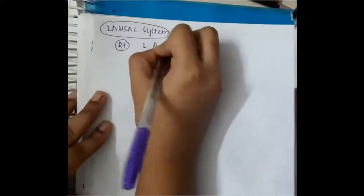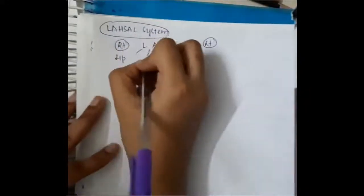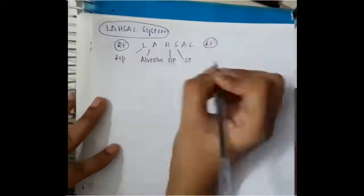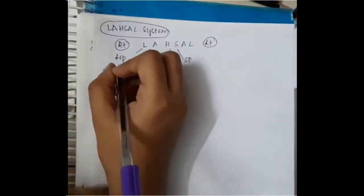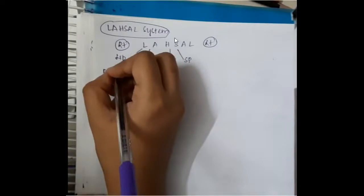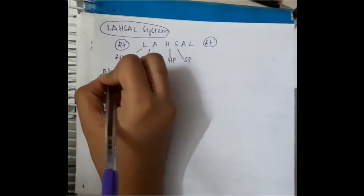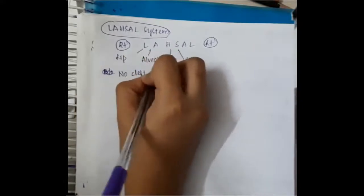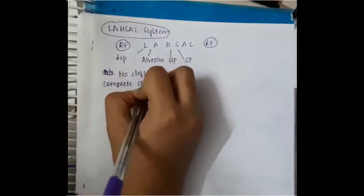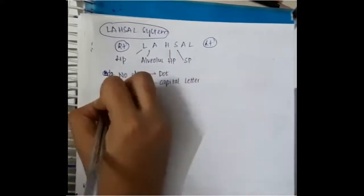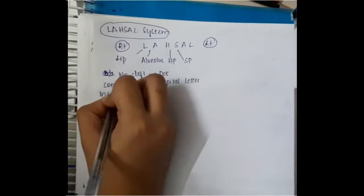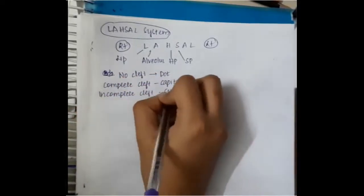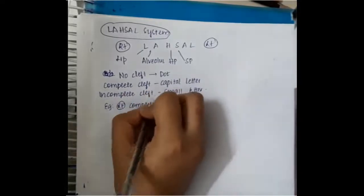We have one important system which is Lashal system which is L for lip, A for alveolus, hard palate and soft palate. Here hard palate and soft palate will only be one. This is right alveolus, right lip, left alveolus, left lip. Whenever there is no cleft, that means if it is normal, then you put a dot. If there is complete cleft lip, you will have to put a capital letter. If it is incomplete cleft lip, you will have to put a small letter. I will give you an example.